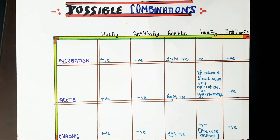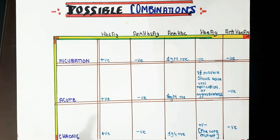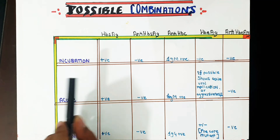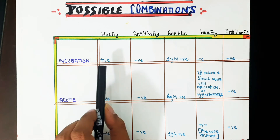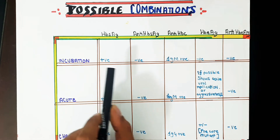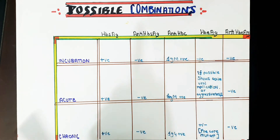Now we'll look at the most common serological combinations seen in clinical practice or exams. The common situations are the incubation period, the acute period, and the chronic period. In the incubation period, the HBs antigen is positive and anti-HBc IgM is positive, since there is no active viral replication yet.